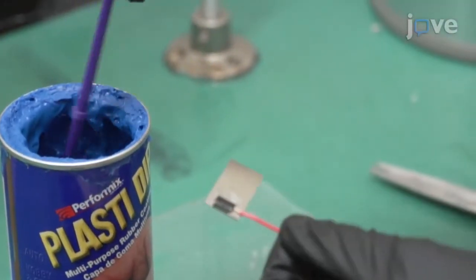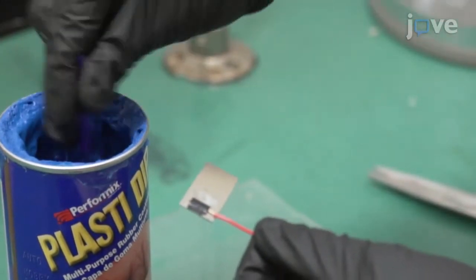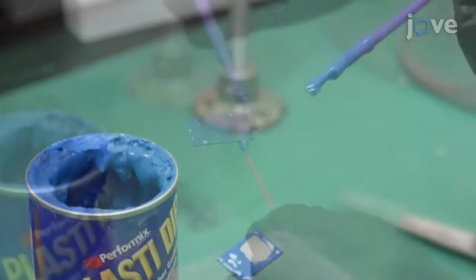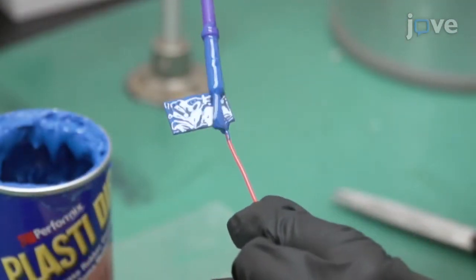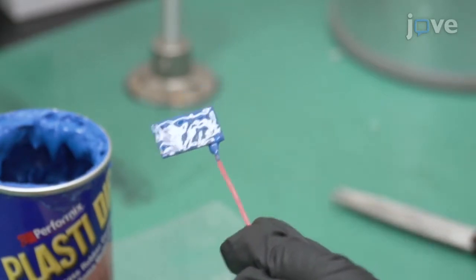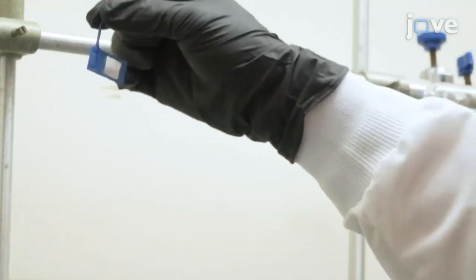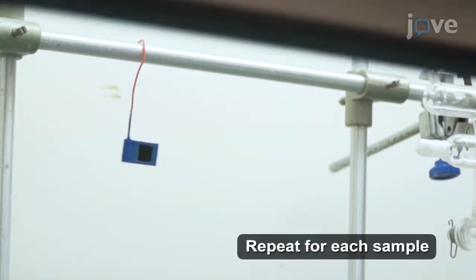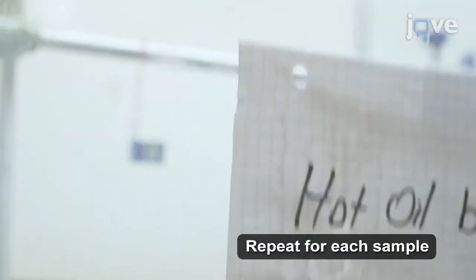Use electrochemical stop-off lacquer to paint a 1 by 1 square centimeter window on the polished side and to cover the entire unpolished side of the sample, including the exposed copper wire. Then dry the painted sample completely in a well-ventilated fume hood for at least 24 hours before the experiments.